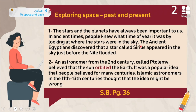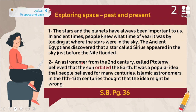The ancient Egyptians discovered that a star called Sirius always appeared in the sky just before the Nile flooded, so they connected seeing that star with the coming flood. An astronomer from the second century called Ptolemy believed that the sun orbited the earth. This was a popular idea that people believed for many centuries.